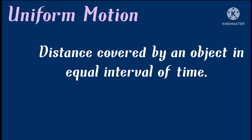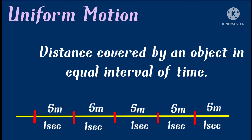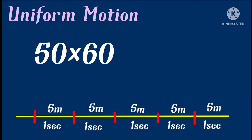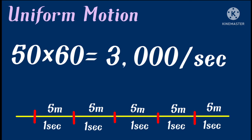After average speed, let's look at uniform motion. In physics, uniform motion means the distance covered by an object in equal intervals of time. For example, if an object is moving at a uniform speed of 5 meters per second, the distance covered in one minute is found by multiplying 5 by 60 (since one minute is 60 seconds), giving us 300 meters.